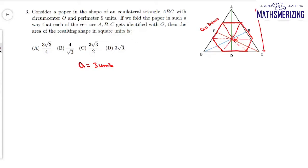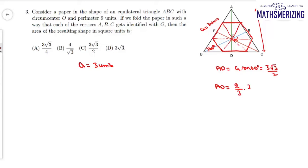We know the length of the side is 3 units. The altitude AD: this angle is 60°, so AD = 3 sin 60° = 3√3/2. Now we can find AO. We know AO to OD is 2:1, so AO = (2/3) × (3√3/2), which simplifies to AO = √3.